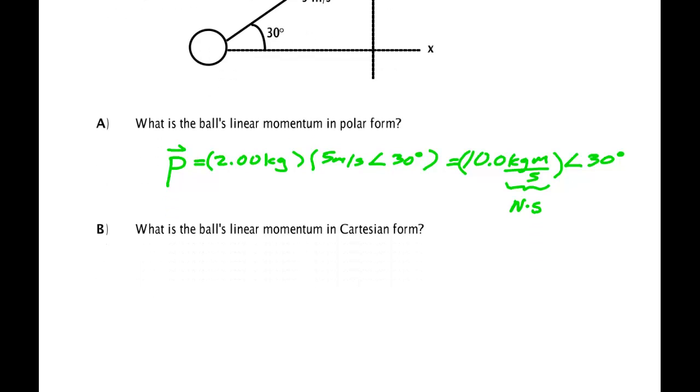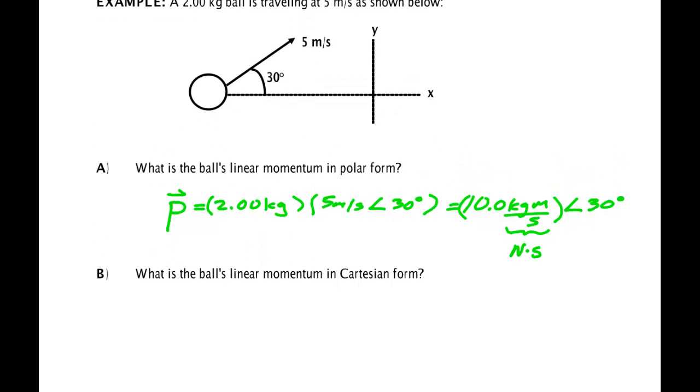Now what if the vector is asked to be find the linear momentum in Cartesian form? Well you got a couple of ways. You could break the velocity vector first in Cartesian and then multiply by the scalar, or if you already have the linear momentum in polar form you can just break that vector into Cartesian form. And since that's what I have, that's what I'll do.